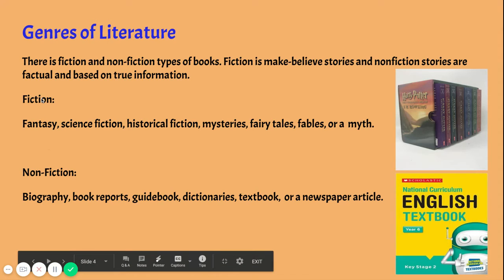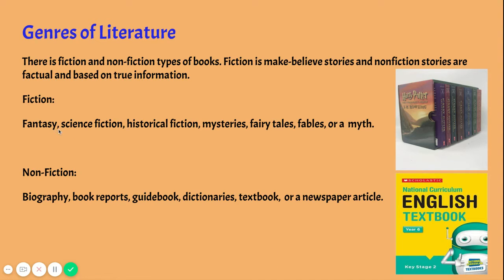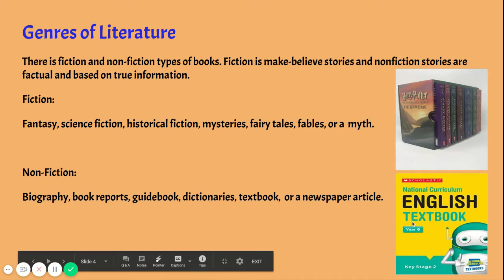Under each of these genres there are a few different categories. Under fiction we have fantasy, science fiction, historical fiction, mysteries, fairy tales, fables, or myths. This collection of Harry Potter books would be fantasy fiction. Under non-fiction the categories are biographies, book reports, guidebooks, dictionaries, textbooks, or newspaper articles. This photo of an English textbook would be non-fiction because it's factual and based on true information.